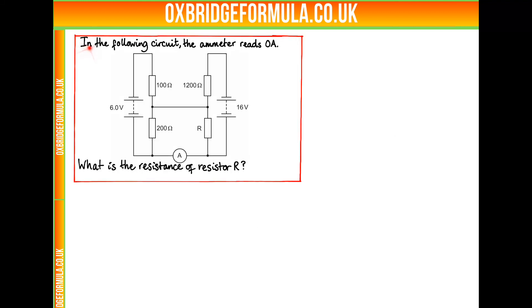We read in the following circuit the ammeter reads zero amps and we have this circuit with two batteries, 6 volts and 16 volts. What is the resistance of resistor R?